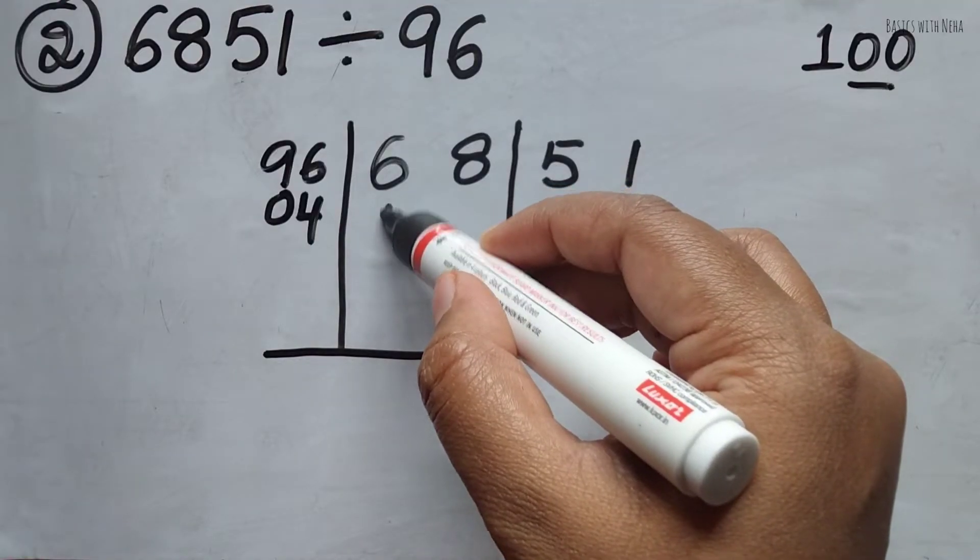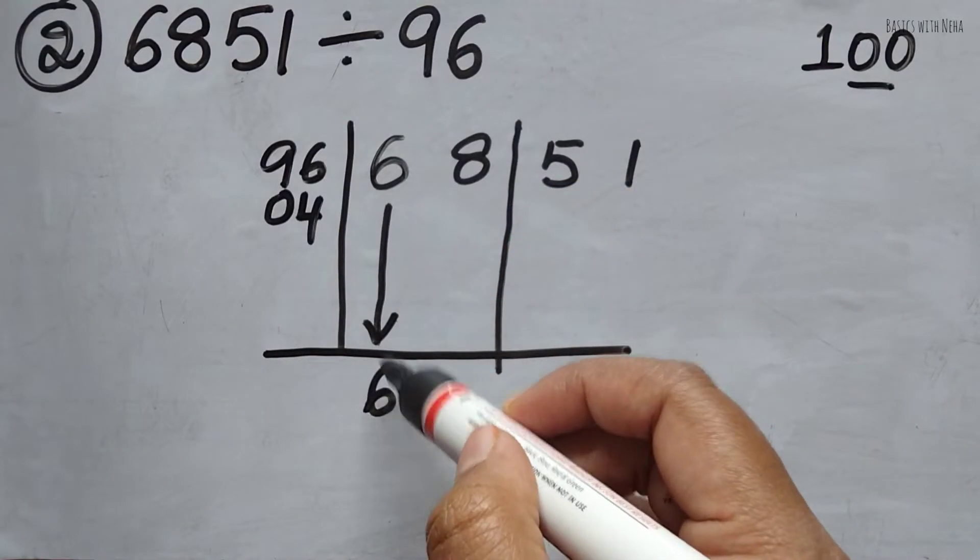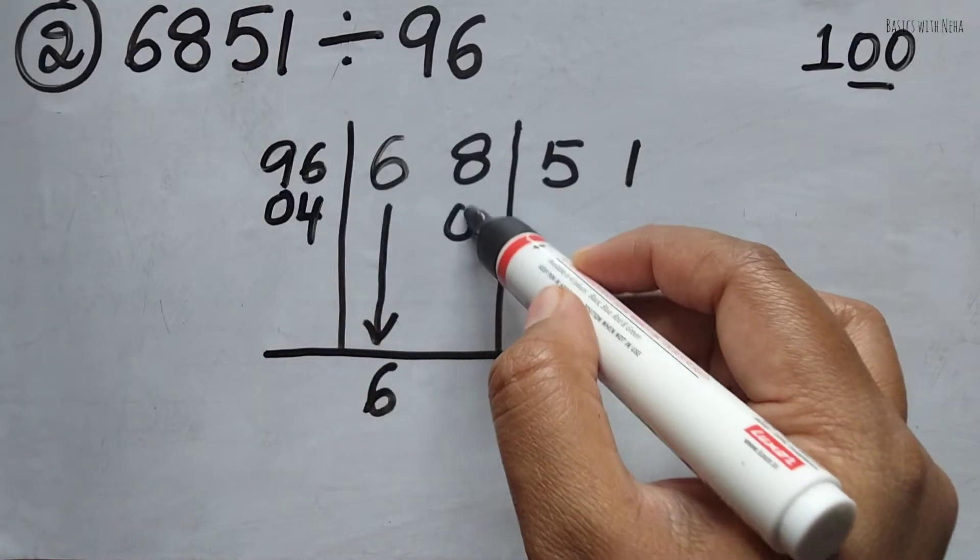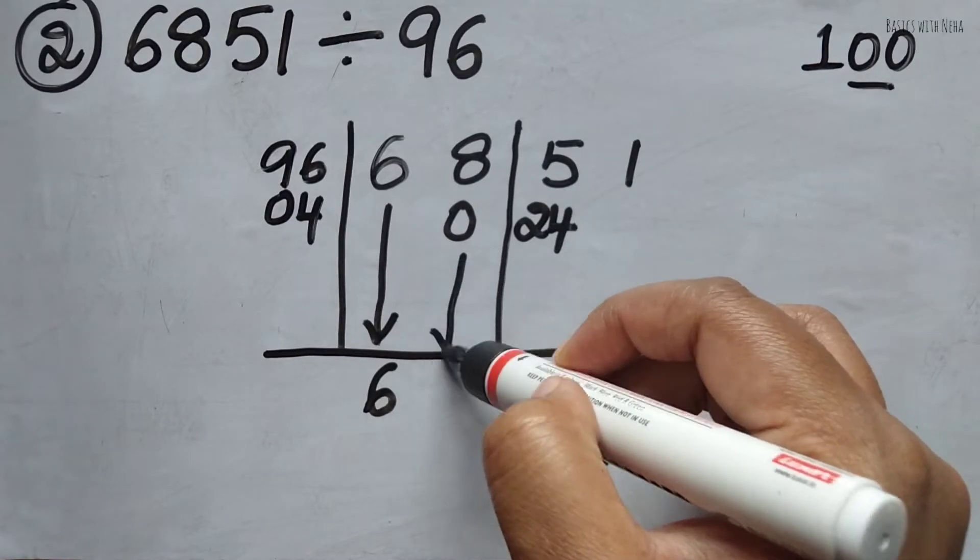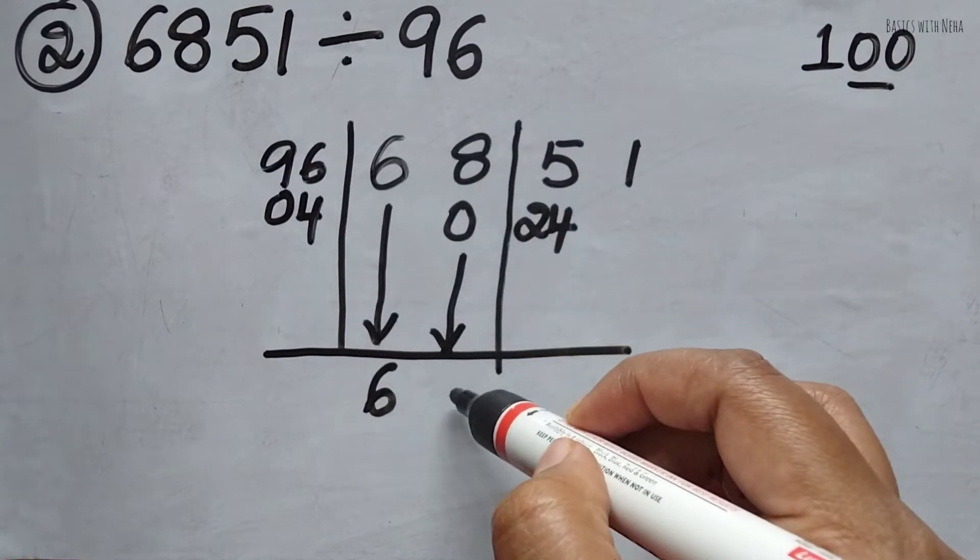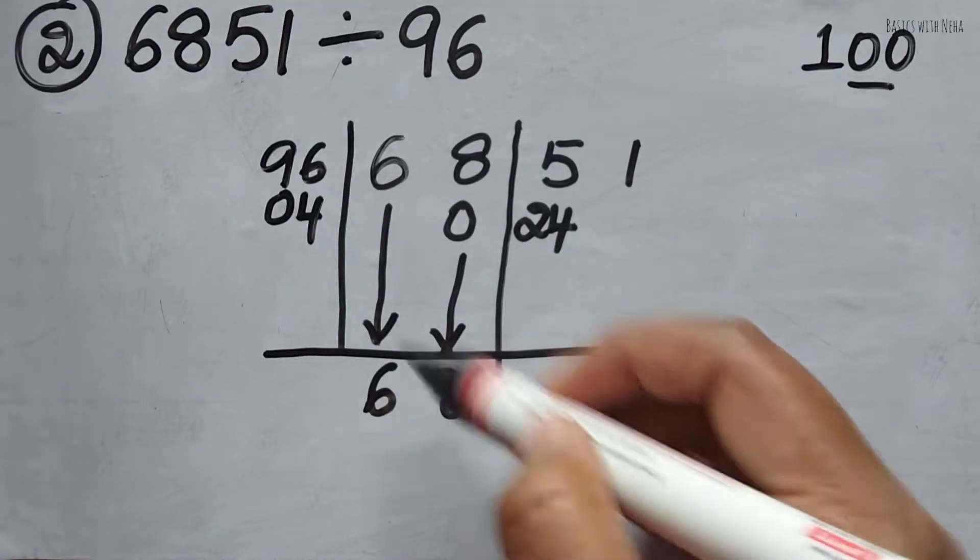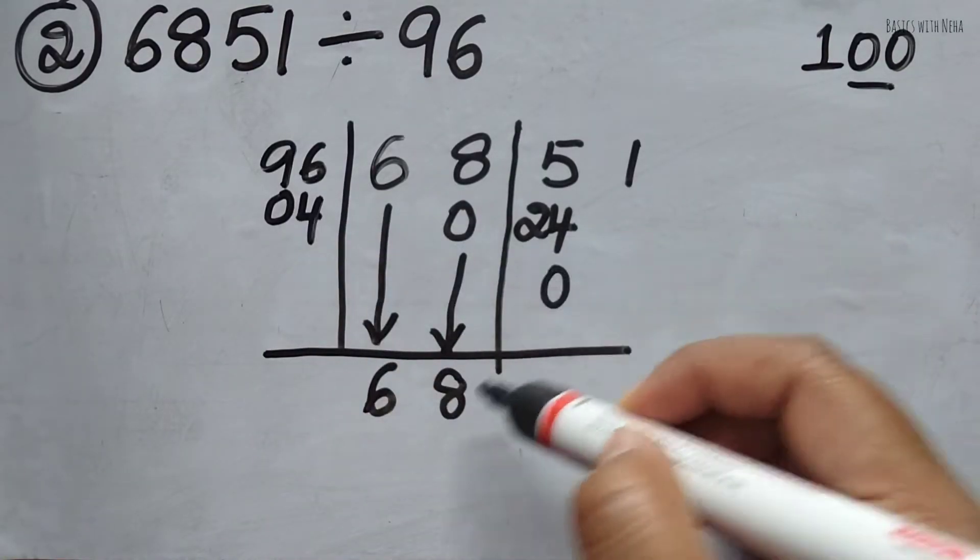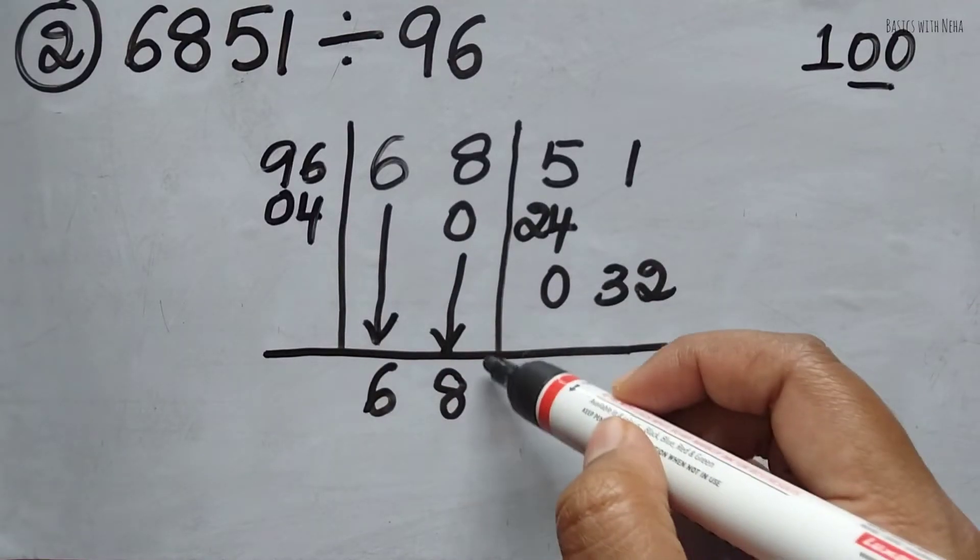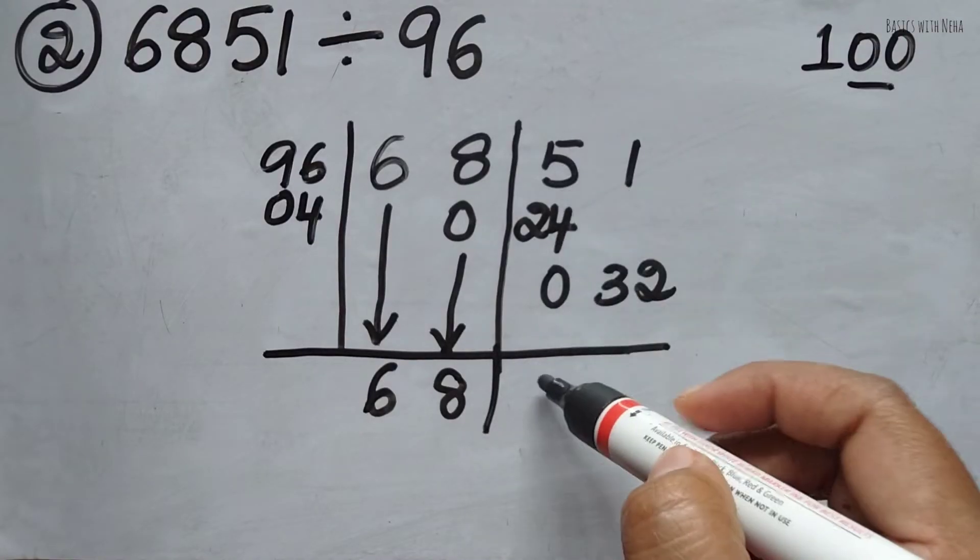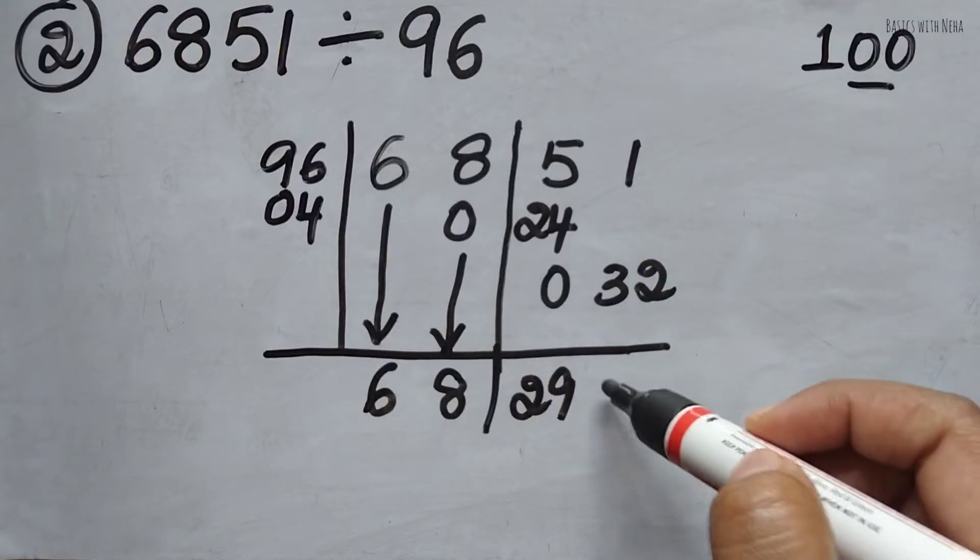Now I'm going to drag this 6 as it is. 6 zeros are 0, 6 fours are 24. 8 plus 0 is 8. Now 8 zeros are 0, 8 fours are 32. 24 plus 5 is 29. 32 plus 1 is 33.